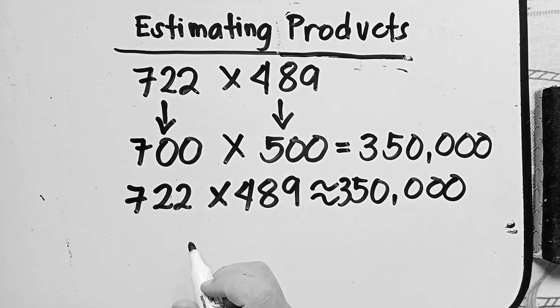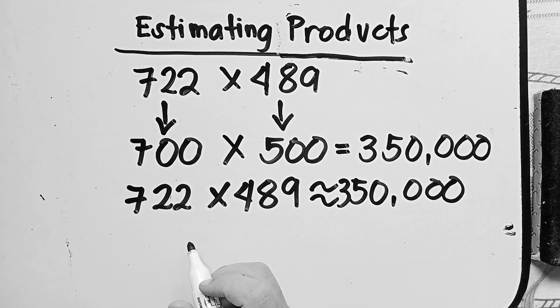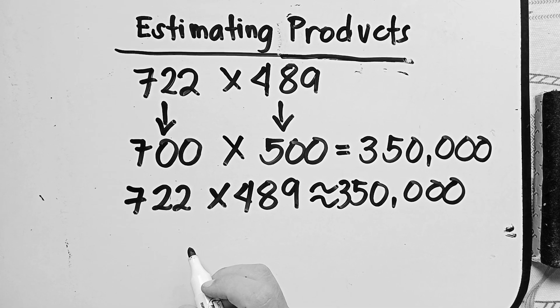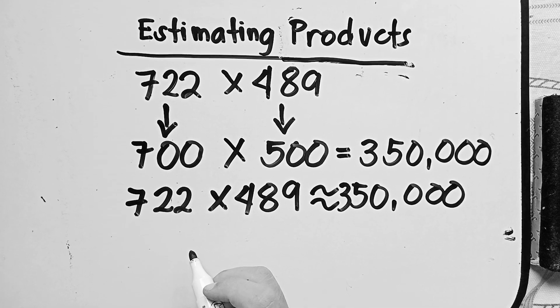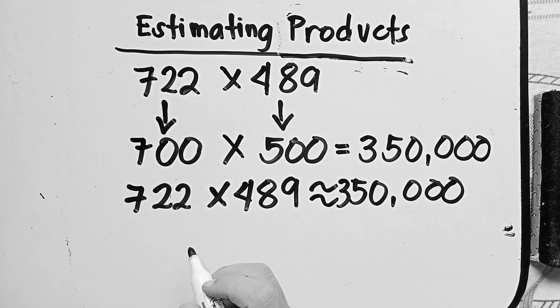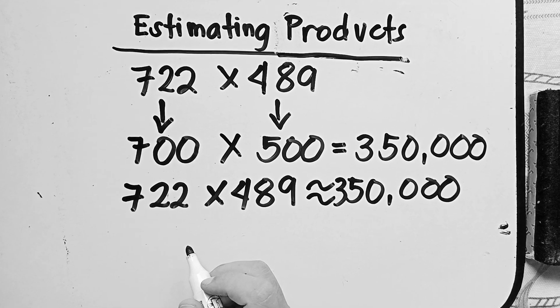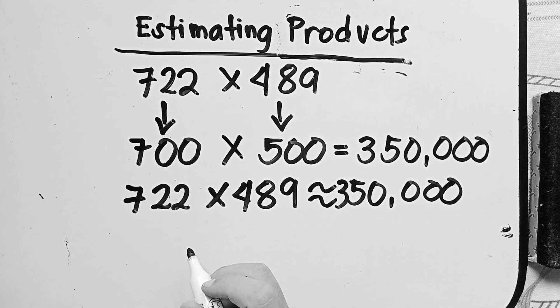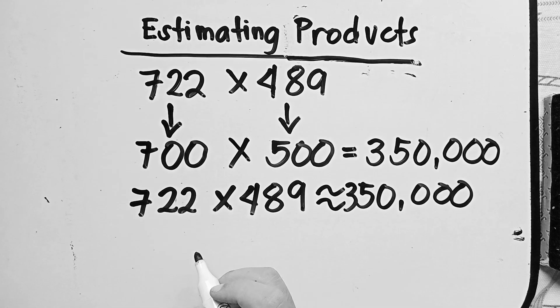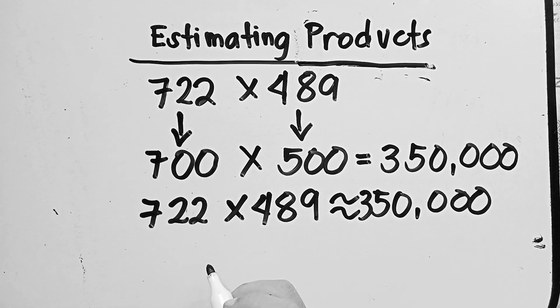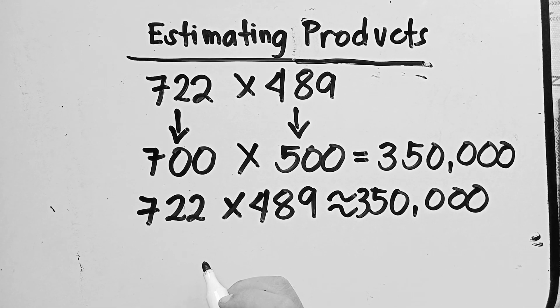If both multipliers end with 50 or halfway numbers, then rounding one number up and one number down will give you a better estimate of the product.